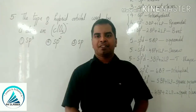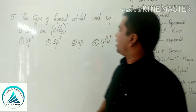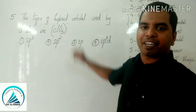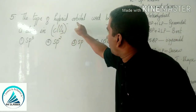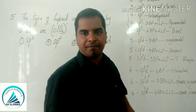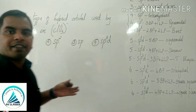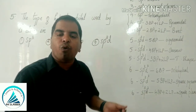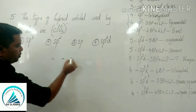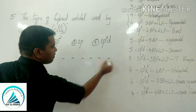Fifth question: what is the type of hybrid orbitals used by chlorine in ClO3 minus? The central atom is chlorine, which belongs to the halogen family, so it has 7 valence electrons.